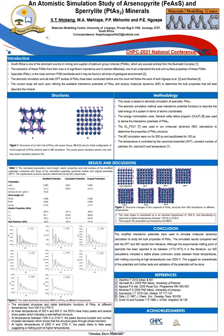To validate the potentials, we produced the radial distribution functions at different temperatures. At lower temperatures of 300 and 900 K, the RDFs have many peaks and sharp peaks indicating a crystalline structure. At temperatures 1300 K and 2100 K, the peaks become broader and the number of peaks decreases, showing that the structure goes through a phase transition.